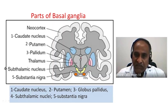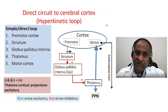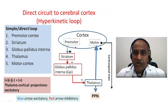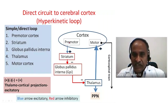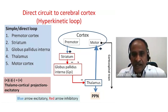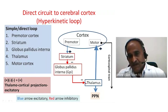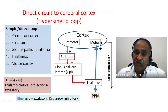These are the connections of the basal ganglia. The first is the direct circuit: the premotor cortex sends to the striatum, which goes to the globus pallidus interna, then to the thalamus and motor cortex. The striatum consists of the caudate nucleus and putamen, and part of the information also reaches the pontopeduncular nucleus of the reticular system.